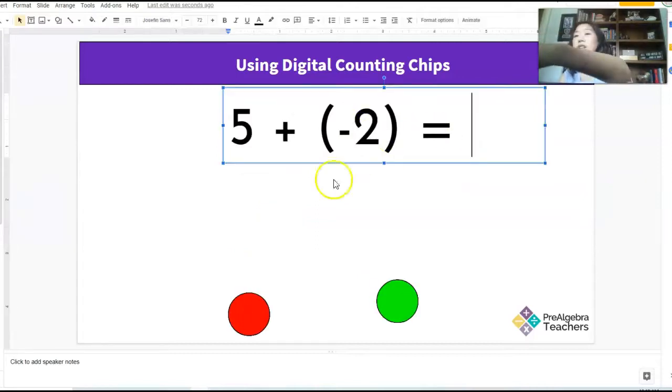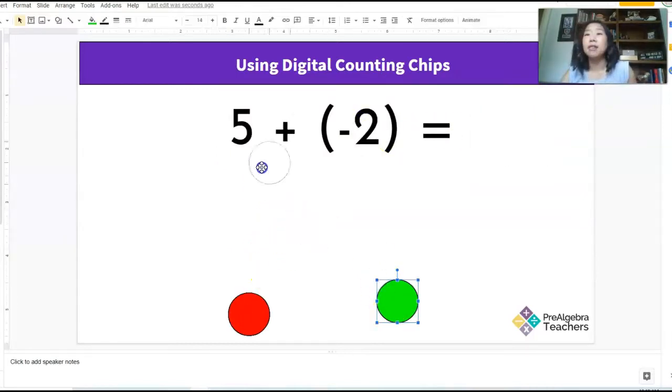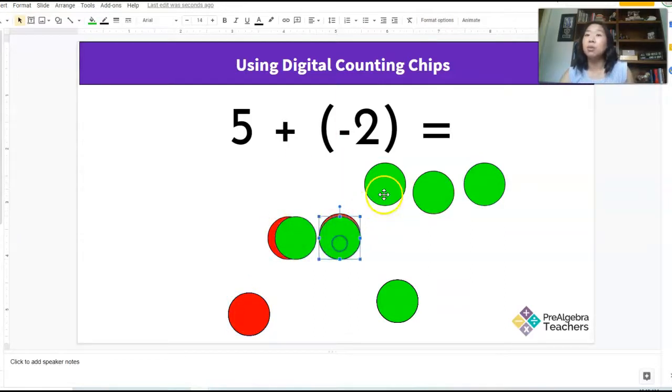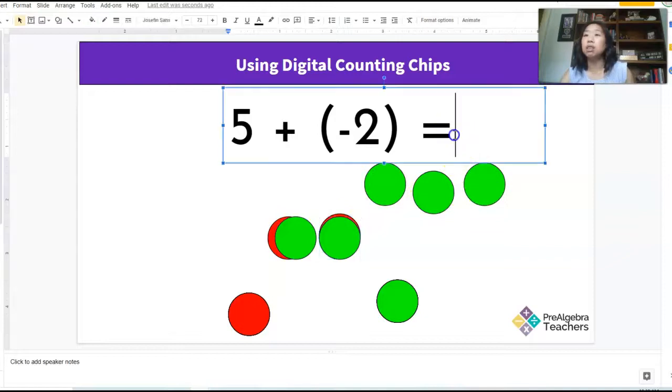Okay. So in this example, I have five positives. One, two, three, four, five. And I'm going to add two negatives. I'm going to pull out two of my red dots. Do any of these zero out? Yes, they do. So these zero out, what do you have left? One, two, three. Three positives. Perfect.